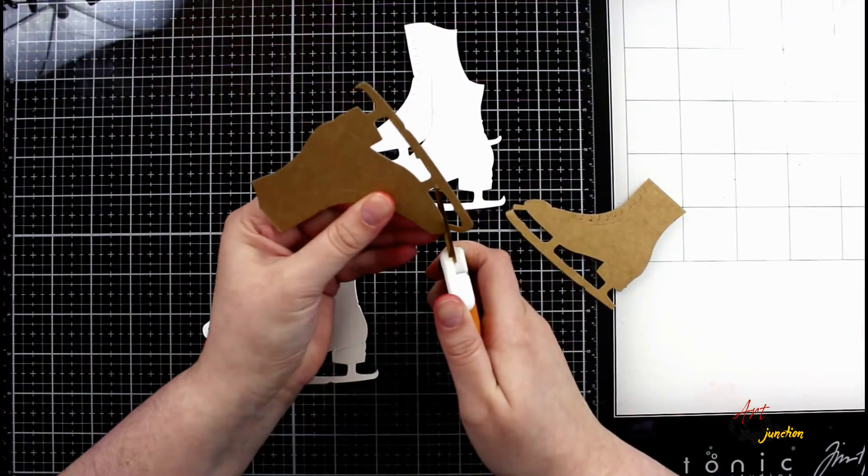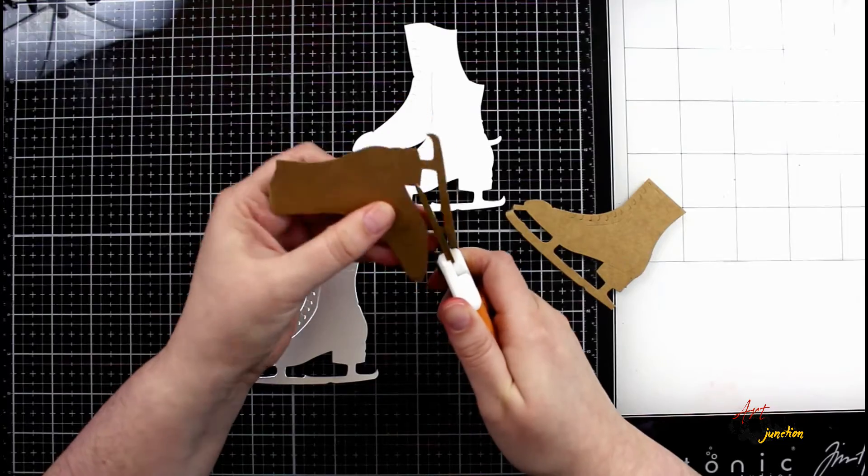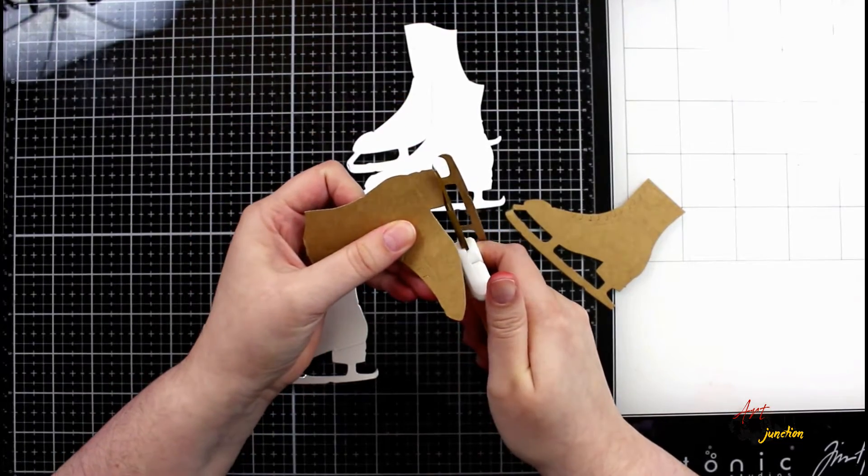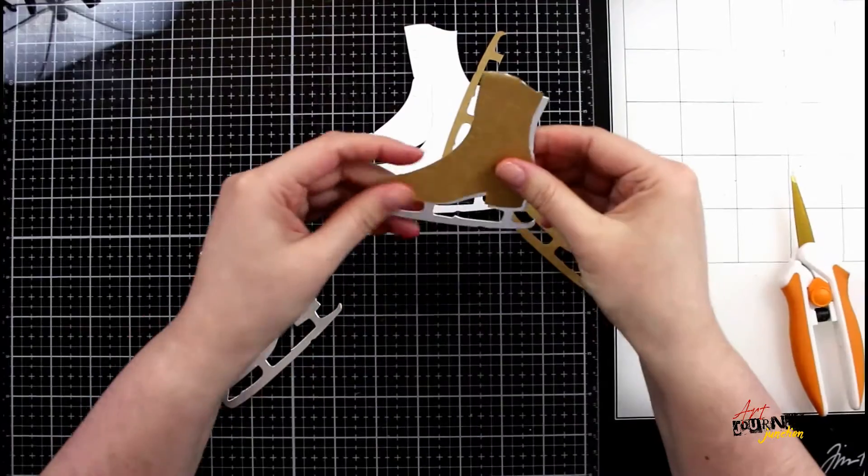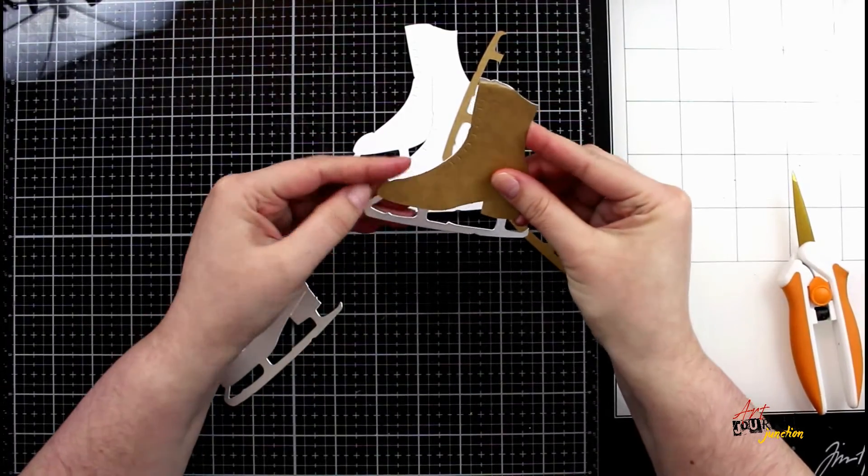Next, I die cut out these ice skating boots from three different types of paper: metallic silver, craft paper, and white, to create a layered ice skating boot.